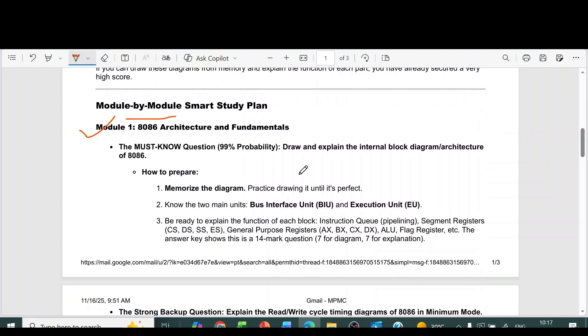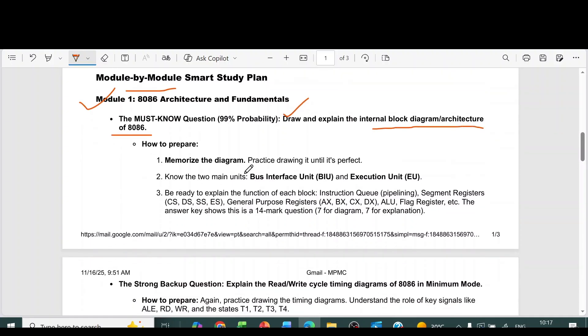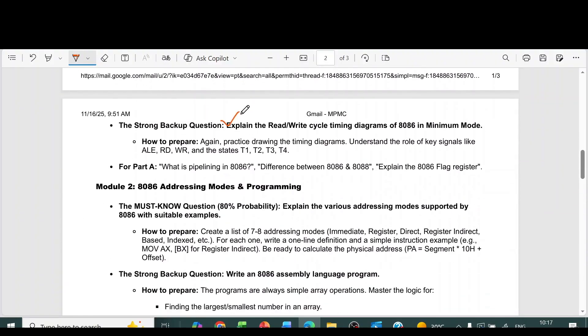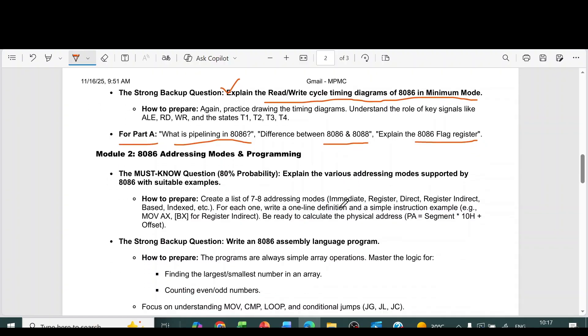From module 1, the first question is draw and explain the internal block diagram or architecture of 8086. Second question, explain the read or write cycle timing diagrams of 8086 in minimum mode. For part A, what is pipelining in 8086, difference between 8086 and 8088, then explain the 8086 flag register. These are from module 1.